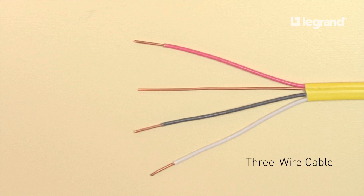And here is a 3-wire cable. Black is hot, red is also hot, white is neutral, and green or bare copper is ground.